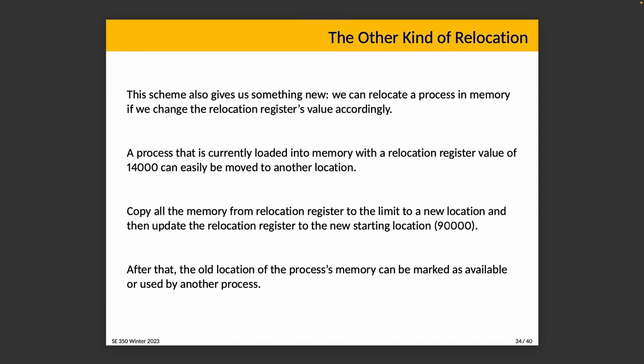Another benefit is relocation. We can relocate a process in memory simply by changing the relocation register's value. If a process is loaded with a relocation register value of 14,000, we move all its memory to a new place and change the register — say, to 90,000. After that, the old location can be marked as available and another process can use it.